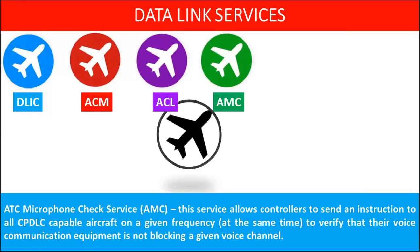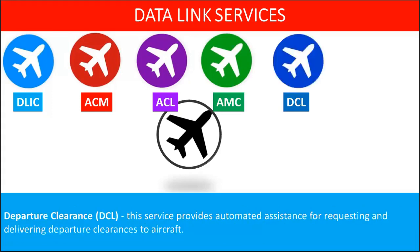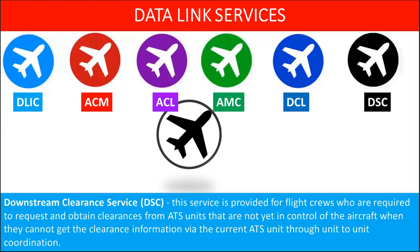ATC Microphone Check service allows controllers to send an instruction to all CPDLC-capable aircraft on a given frequency simultaneously, to verify that their voice communication equipment is not blocking a given voice channel. Departure Clearance service provides automated assistance for requesting and delivering departure clearances to aircraft at busy airports. Downstream Clearance service is provided for flight crews who need to request and obtain clearances from ATS units not yet in control of the aircraft, when they cannot get the clearance information through the current ATS unit via unit-to-unit coordination.